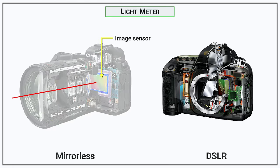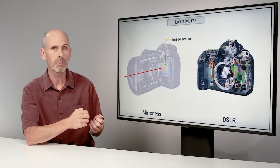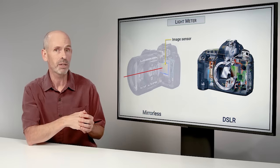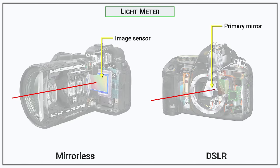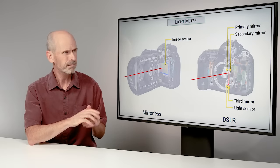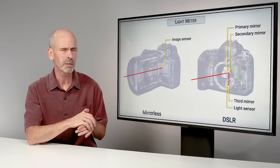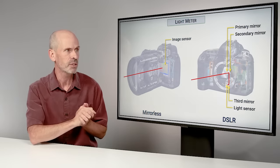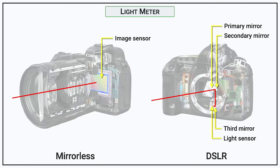With a mirrorless camera, light comes in to the image sensor, which has a lot of pixels to read information and can do an amazingly good job giving you a good exposure reading. With the previous generation, the digital SLR, light would hit a primary mirror, go through to a secondary mirror, onto a third mirror, and finally onto the light sensor. These systems got more and more sophisticated over the years and are quite good — but they've reached a plateau where they need an educated user to make the best use of them.